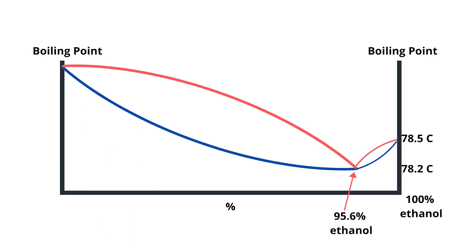When we graph this, we can see that 100% pure ethanol has a higher boiling point than 95.6%, making it almost impossible to distill further.